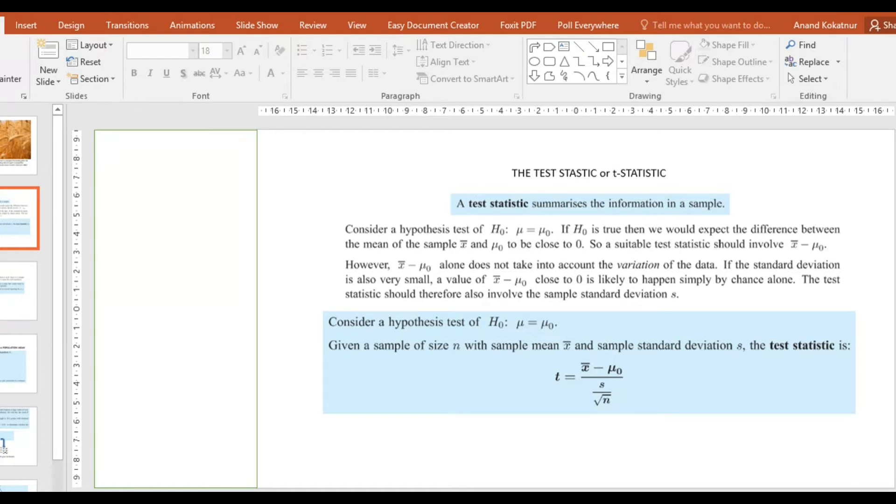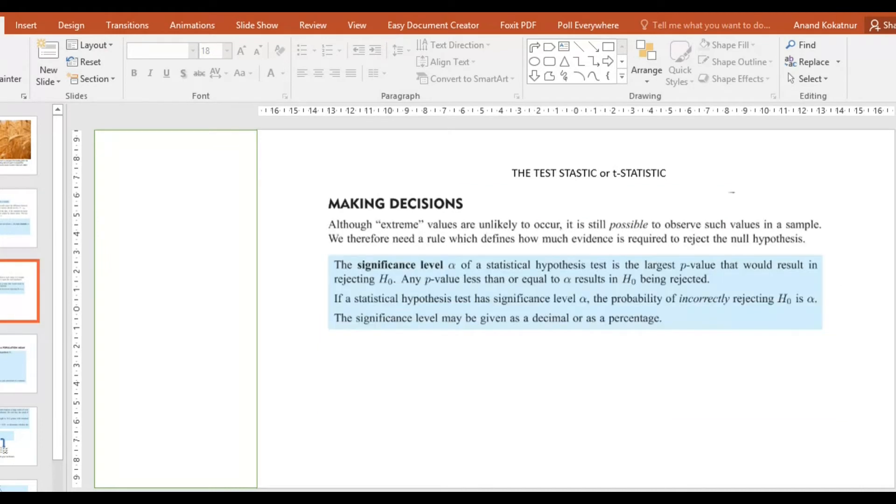You'll understand it more clearly when we start doing the examples. There is a way how to calculate the test, but I will be showing you how to do it using a calculator. In order to calculate the t-test score, we need to decide on the significance level, usually denoted by the letter α (alpha).